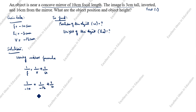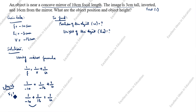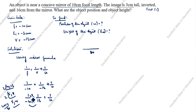Rearranging: 1/u = 1/(minus 10) + 1/16. Taking LCM of 10 and 16: 2 into 5 gives 10, 2 into 8 gives 16, so LCM is 80. This gives: minus 8 over 80 plus 5 over 80.